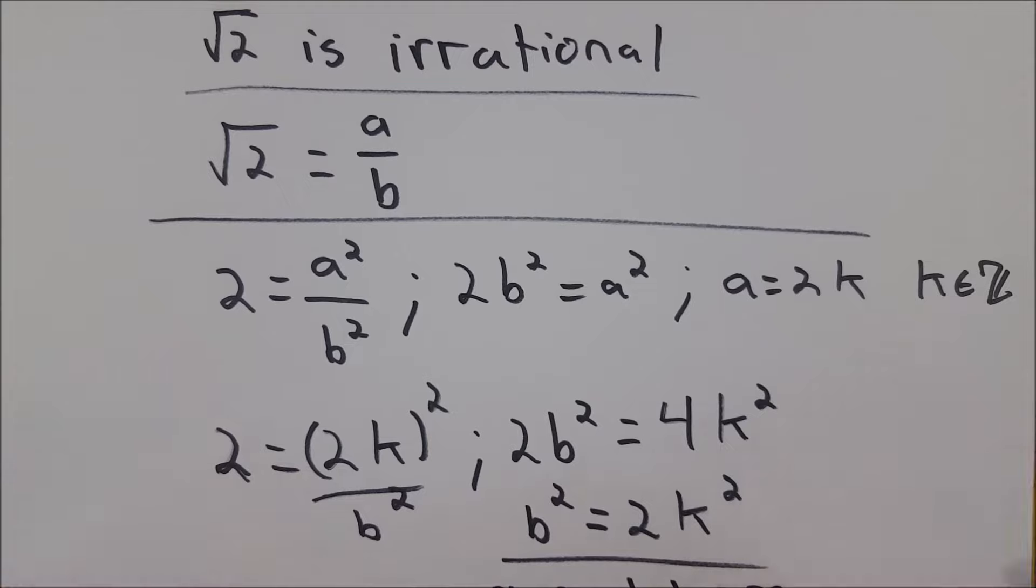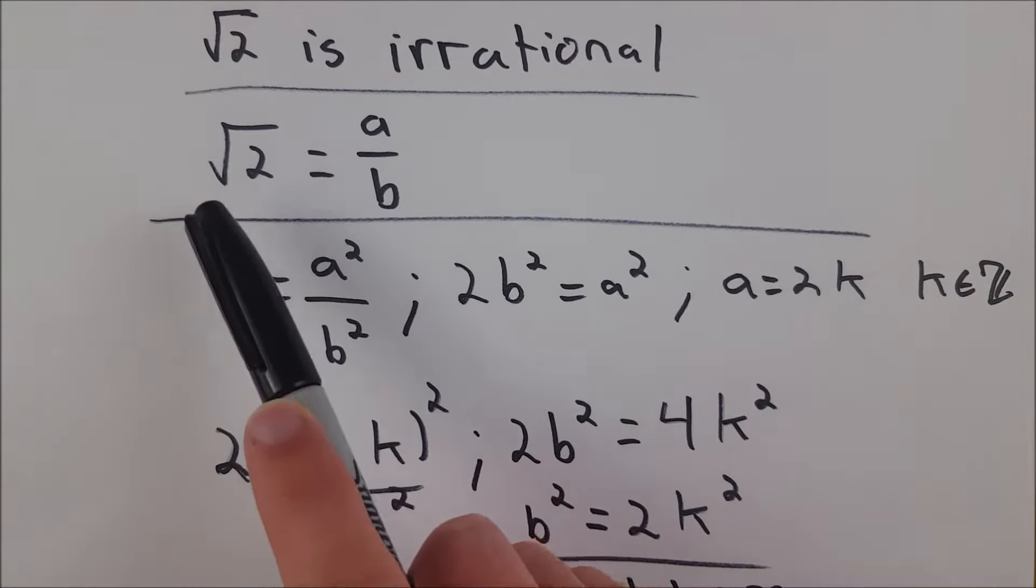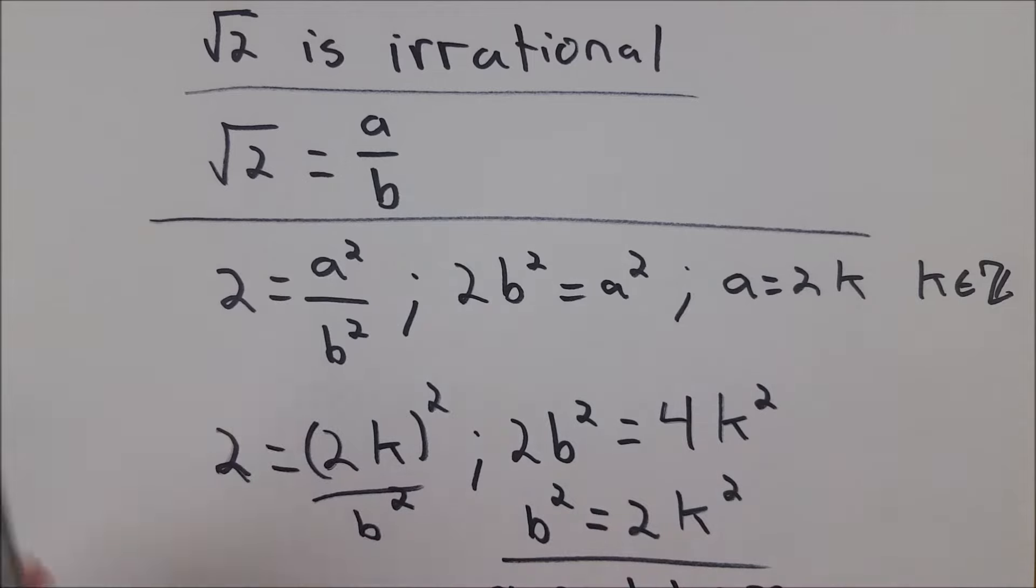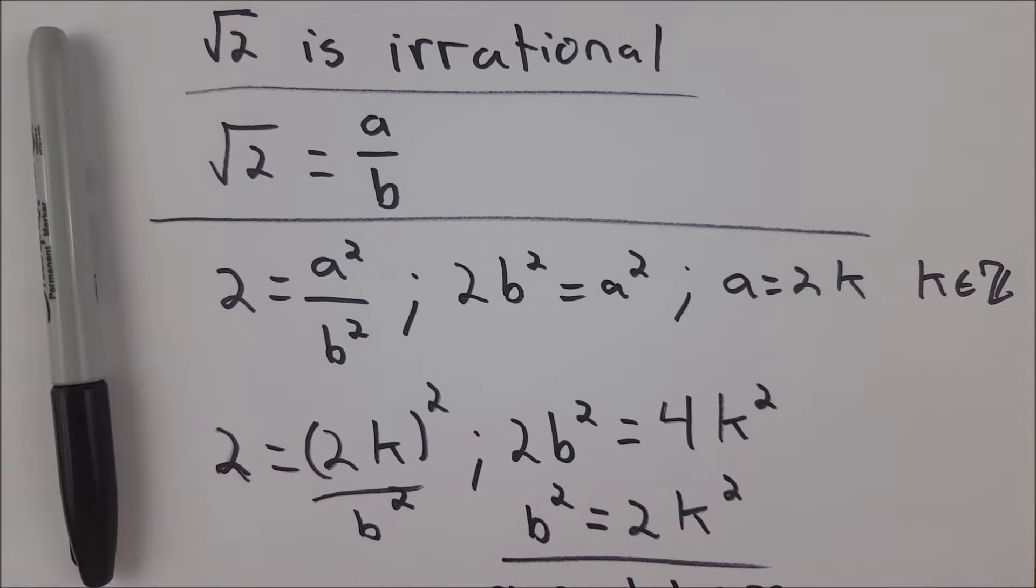Of course opposite statements cannot be true. Therefore our original assumption that the square root of 2 is a rational number must be false. Thus square root of 2 is in fact irrational.